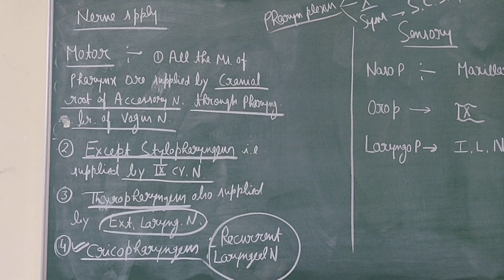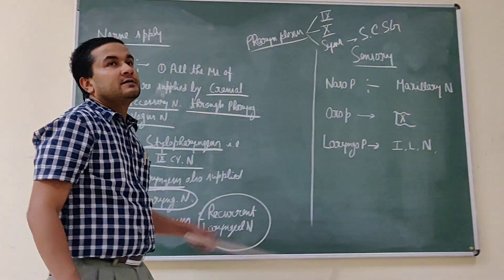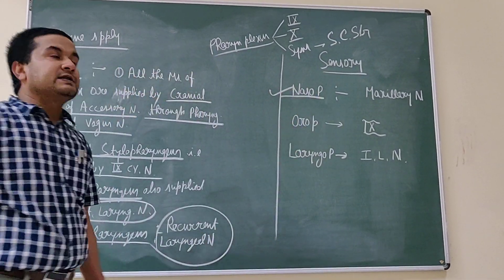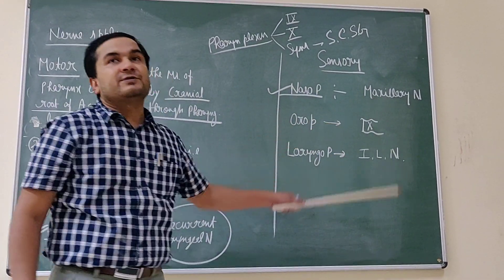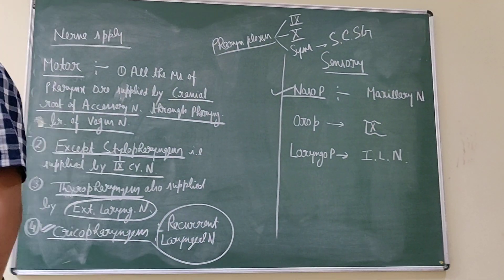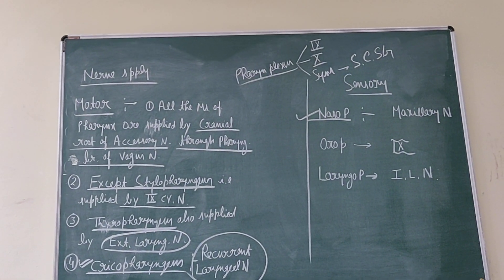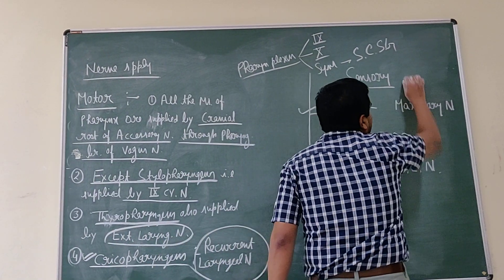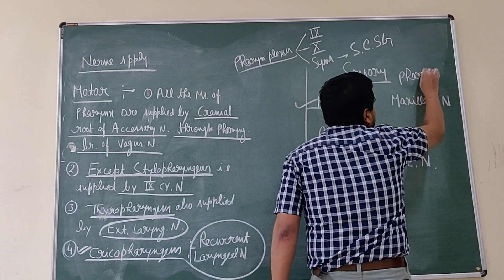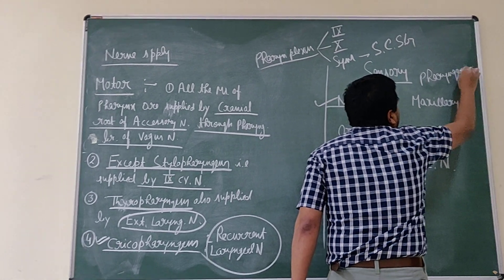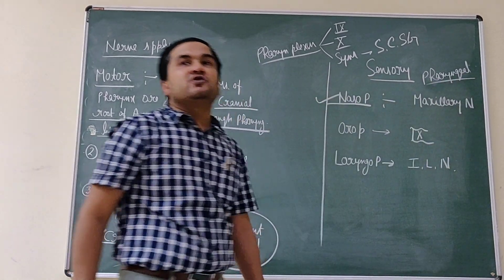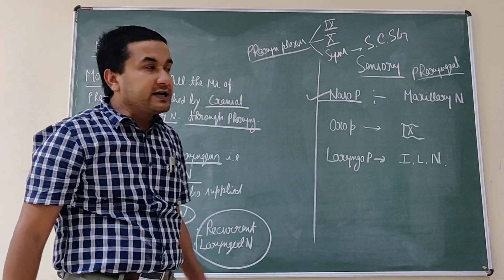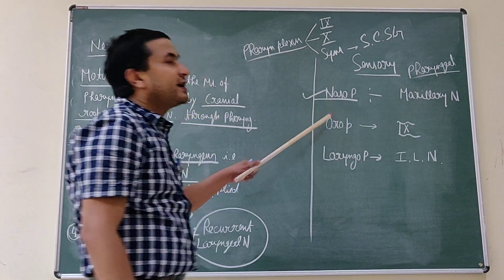For the sensory supply, the nasopharynx is supplied by the branches of the maxillary nerve through the pterygopalatine ganglion. These are the pharyngeal branches that come out from the pterygopalatine ganglion, carried by the maxillary nerve, and supply the mucosa of the nasopharynx.